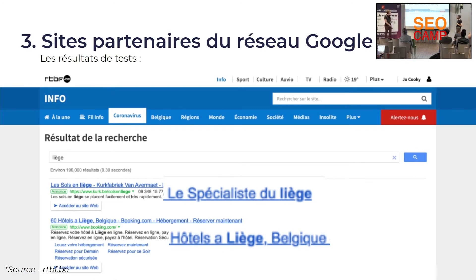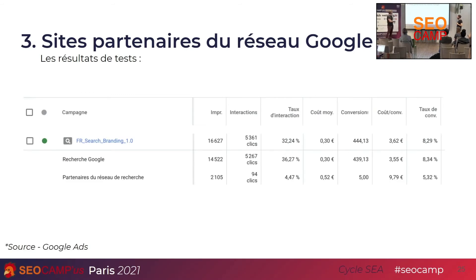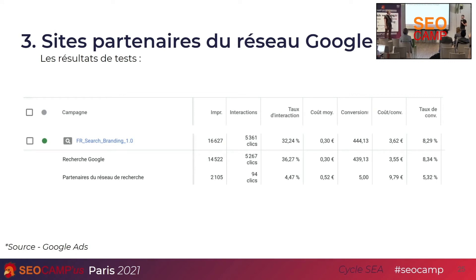Ça se traduit dans les chiffres — il suffit de regarder les deux types de réseaux, la recherche Google pure et les partenaires. On voit que le taux d'interaction est dramatiquement différent, qu'on a un coût moyen qui va augmenter à presque le double. On ne convertit quasiment pas — je suis même étonné d'avoir obtenu 5 conversions — avec un taux de conversion moins intéressant et un coût par conversion du triple. Clairement, si vous avez des campagnes pour convertir, ce n'est pas le bon endroit où apparaître.